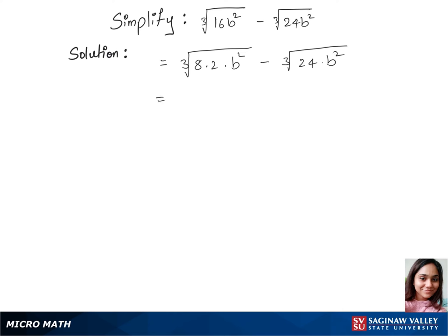Now let's separate the cubic root between all those terms. So that's cubic root of 8 times cubic root of 2 times b squared. We just combine those two minus cubic root of 24b squared will be same for now.